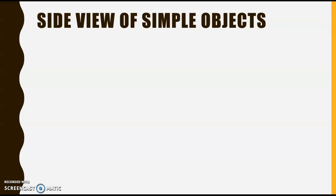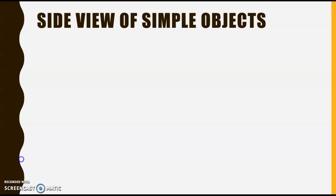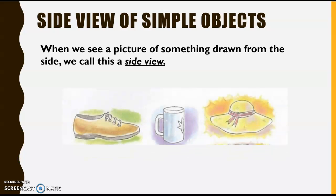Let's look at side view of simple objects. When we see a picture of something drawn from the side, we call this a side view. I found three pictures drawn from a side view. This is a picture of a shoe, that is a picture of a mug or a cup, and that is a picture of a straw hat. All these three objects were drawn from the side.